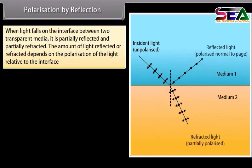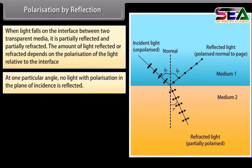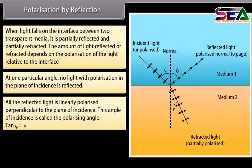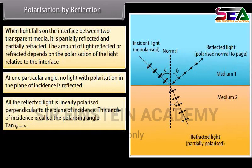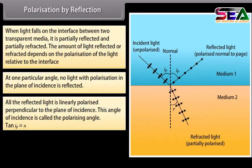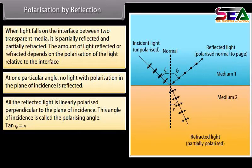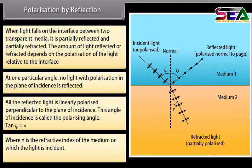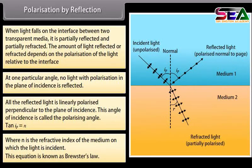Polarization by reflection. When light falls on the interface between two transparent media, it is partially reflected and partially refracted. The amount reflected or refracted depends on the polarization of the light relative to the interface. Consider an unpolarized light striking the interface between medium one and medium two. At one particular angle, no light with polarization in the plane of incidence is reflected. All the reflected light is linearly polarized perpendicular to the plane of incidence. This angle of incidence is called the polarizing angle. Tan i_P equals n, where n is the refractive index of the medium on which the light is incident. This equation is known as Brewster's law.